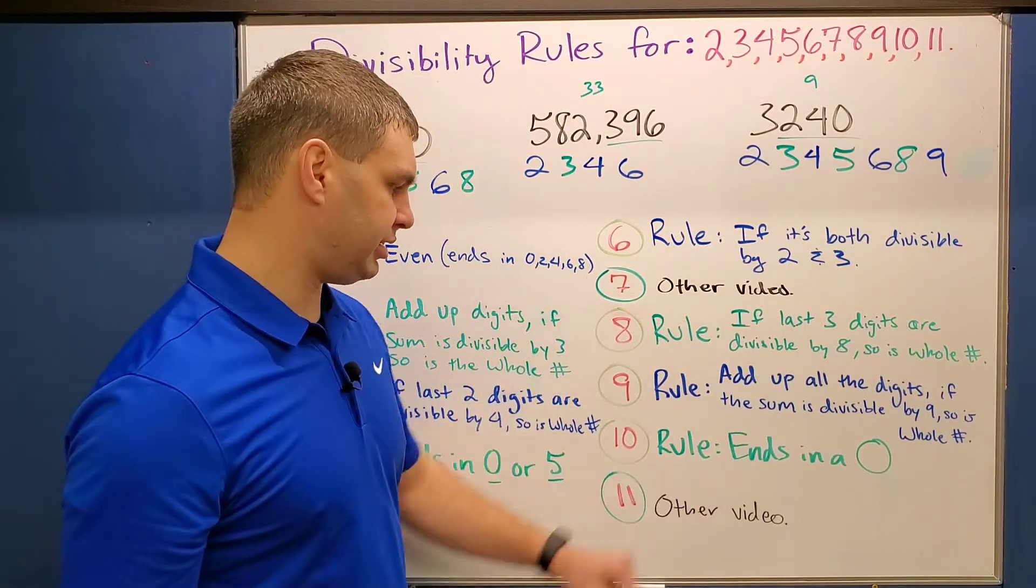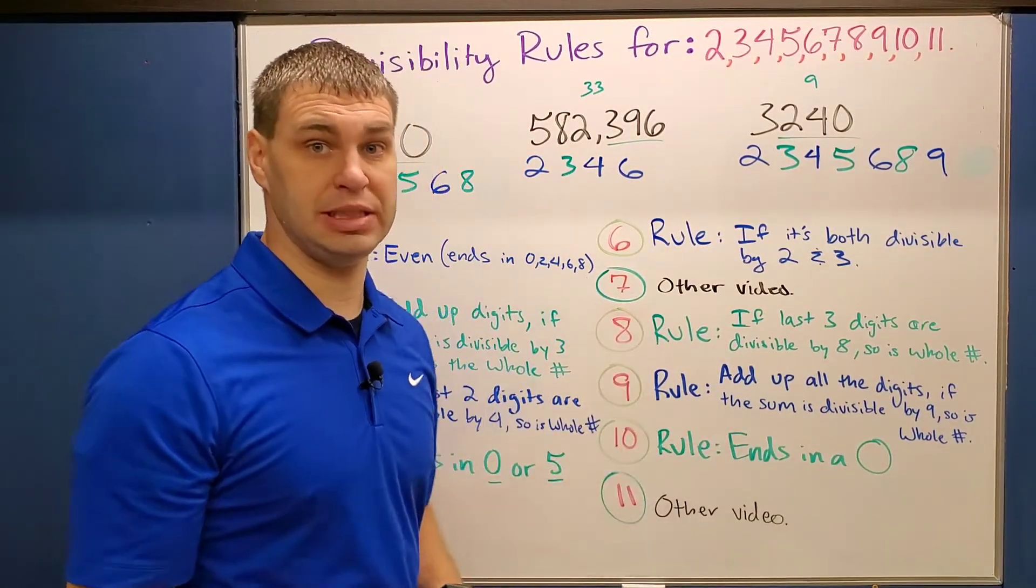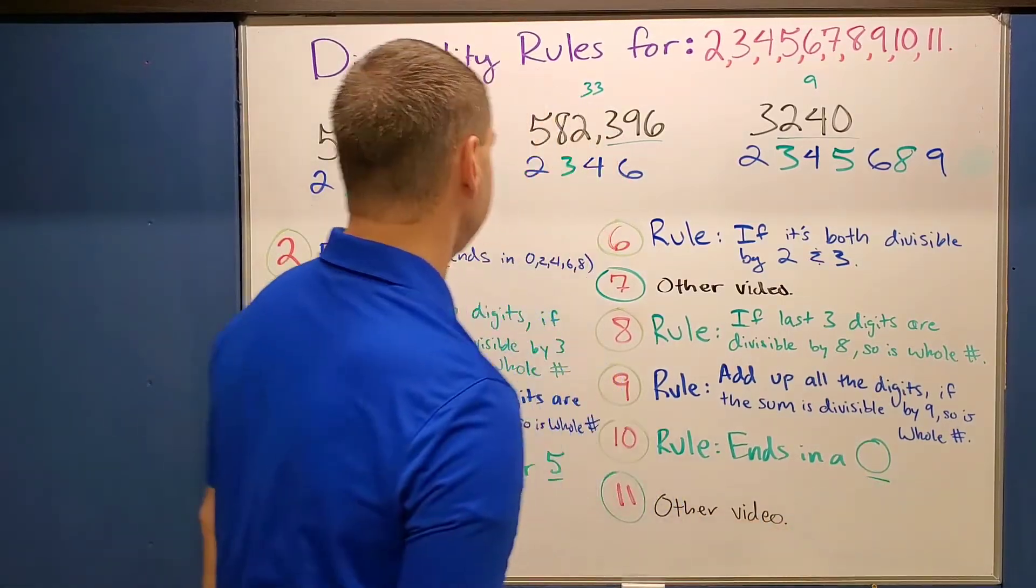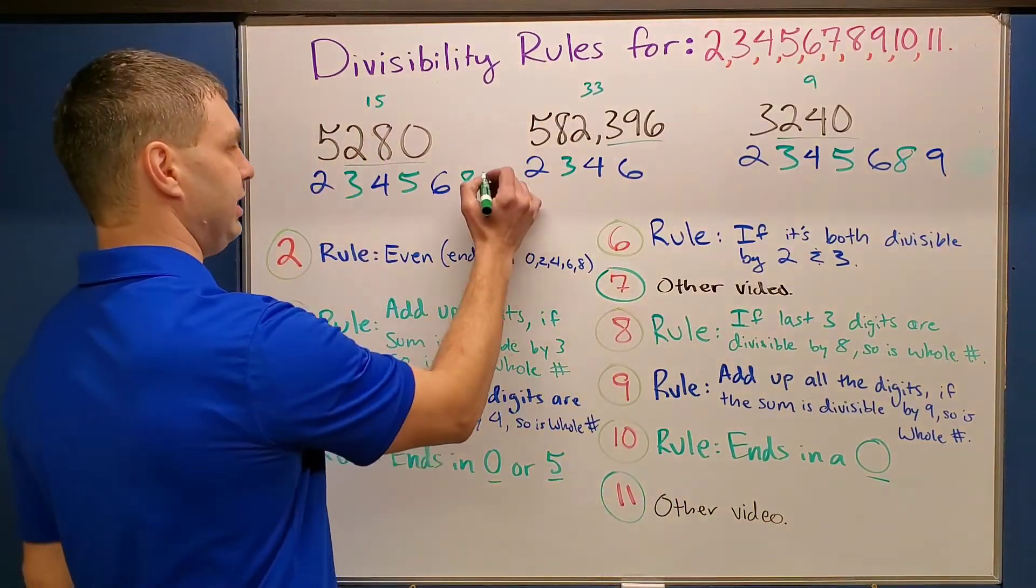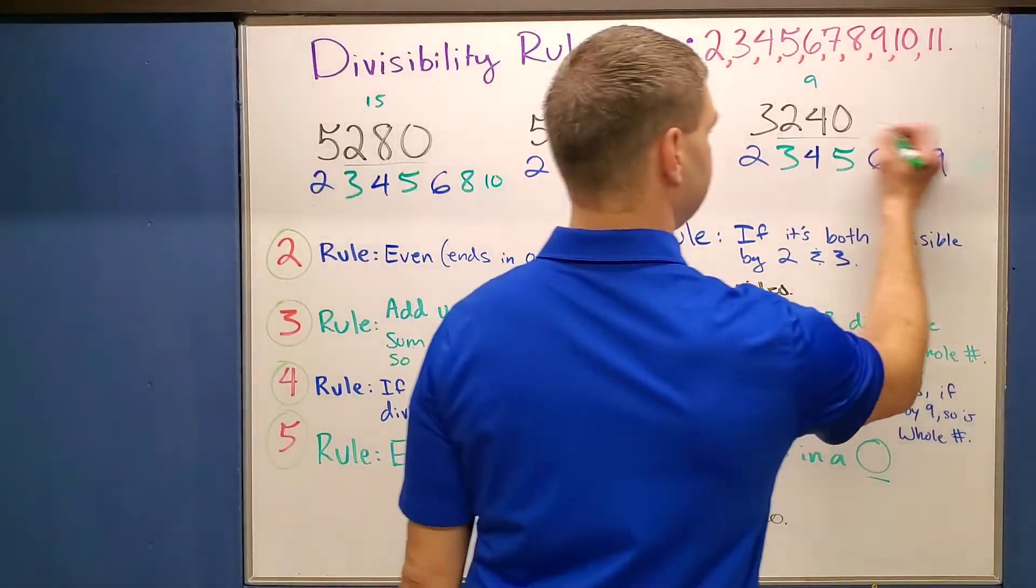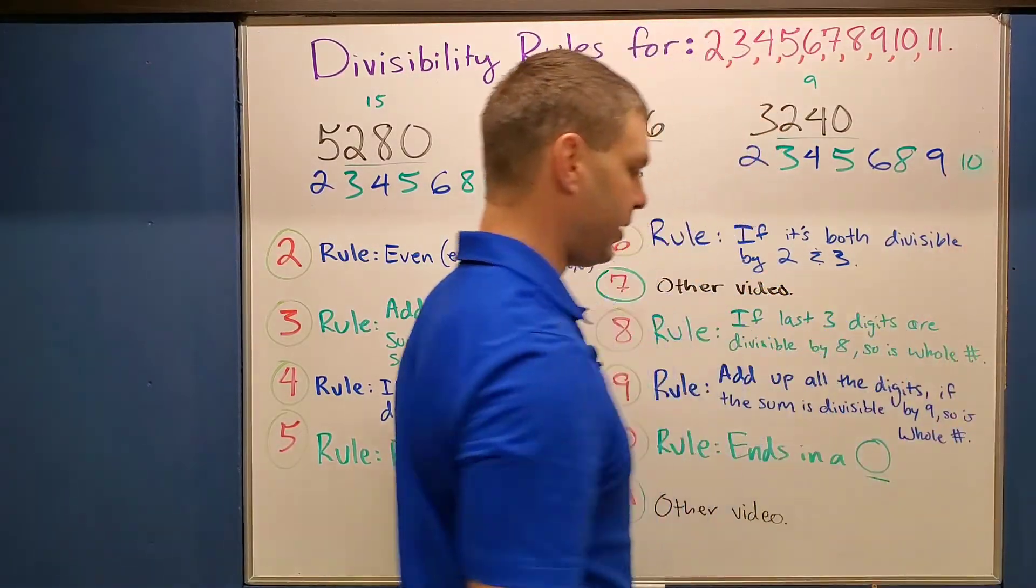The divisibility rule for 10 is pretty simple. If it ends in a zero, it is going to be divisible by 10. So, I think for 5,280, this one is divisible by 10, as well as 3,240.